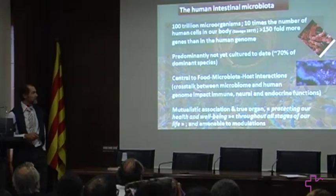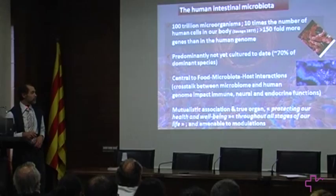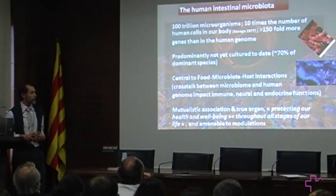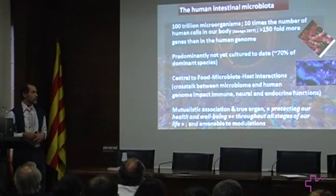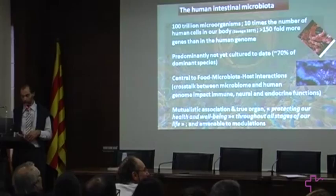The gut microbiota is exposed to the main pool of immune cells of the human body, the second pool of neural cells of the human body, and also many endocrine functions that it may be interacting closely with. We see this mutualistic association with the human, meaning we have a true organ in our gut which is essentially protective throughout all stages of life. And importantly, it's possible to change or at least modulate the microbiota in terms of composition and functionality.